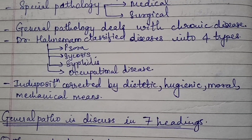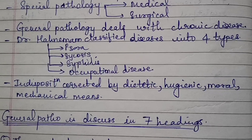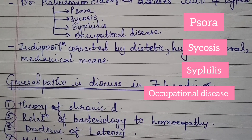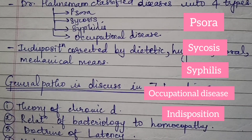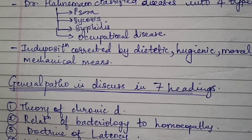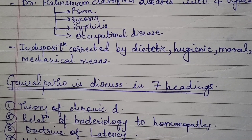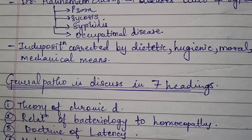Dr. Hahnemann classified diseases into four types: Psora, Sycosis, Syphilis, and occupational disease — indisposition corrected by dietetic, hygienic, moral, and mechanical means.